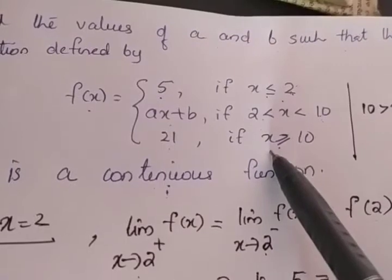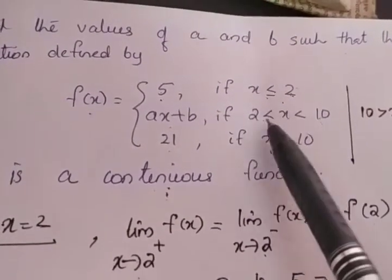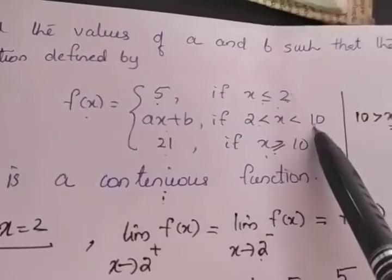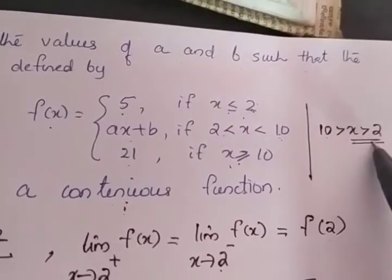So here, if we are not able to identify what you have to do, read the second one in the reverse order. Instead of reading from the left read from the right. How we can read then 10 greater than x greater than 2. So x greater than 2 comes here.